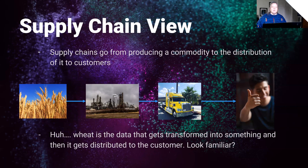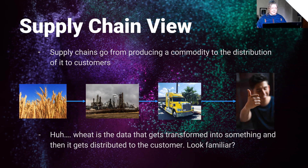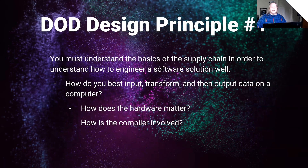A supply chain is basically: wheat gets cut and taken for processing, transformed into something else, driven, and finally delivered to the customer. That's really similar to how data gets transformed on a computer — except maybe the truck is a bus. This leads to DOD design principle number one: you have to understand the basics of the supply chain in order to engineer a software solution well. How do you best input, transform, and output your data? How does the hardware matter? How does the compiler matter?